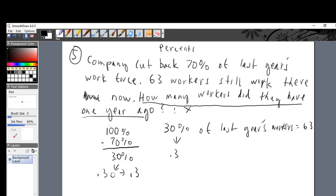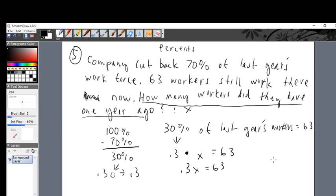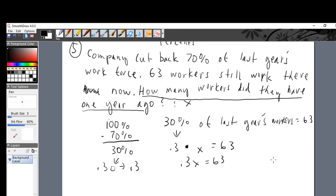So 0.3 times last year's workers is x, is equal to 63. And the best way to write this is 0.3x equals 63. Let me move this up a bit, I don't want anything out of the line of sight if I can avoid it.